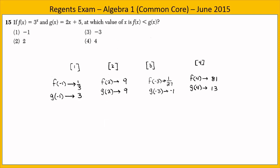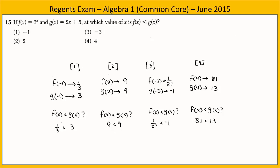In Exercise 15, we are given two functions f and g, and we want to know at which value of x is f less than g. Substitute each answer choice into both functions and compare: evaluate f and g at negative 1, 2, negative 3, and 4. At x equals negative 1, f equals one-third and g equals 3 — one-third is less than 3, so that's true. The inequalities for choices 2, 3, and 4 are not true. Choice 1 is our answer.